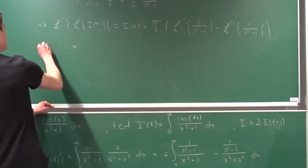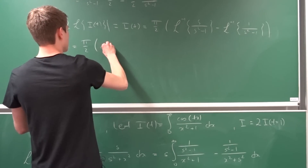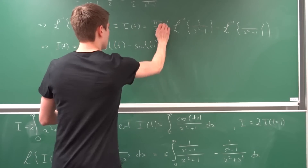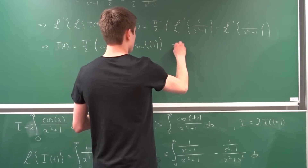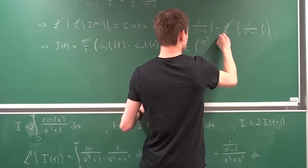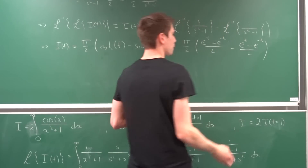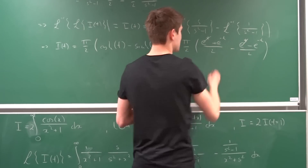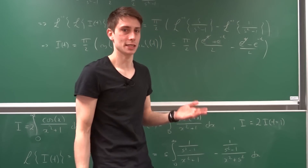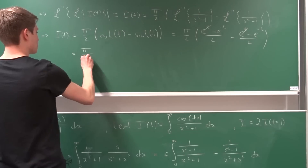The inverse Laplace transform of s over (s squared minus 1) is the hyperbolic cosine of t, and the inverse Laplace transform of 1 over (s squared minus 1) is the hyperbolic sine of t. So I(t) equals pi over two times (cosh(t) minus sinh(t)). Using the exponential definitions: cosh(t) minus sinh(t) equals (e^t plus e^{-t})/2 minus (e^t minus e^{-t})/2 — the e^t terms cancel and we get 2·e^{-t}/2 = e^{-t}. So I(t) equals pi over two times e to the minus t.